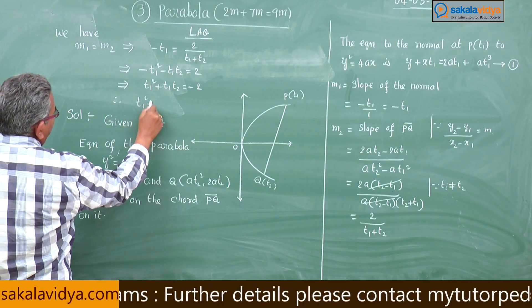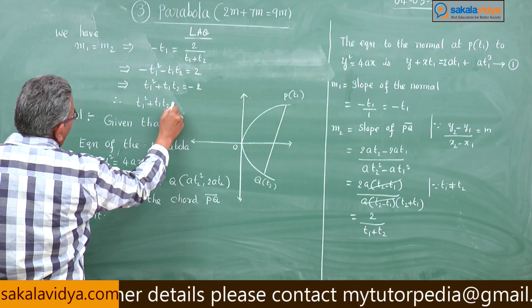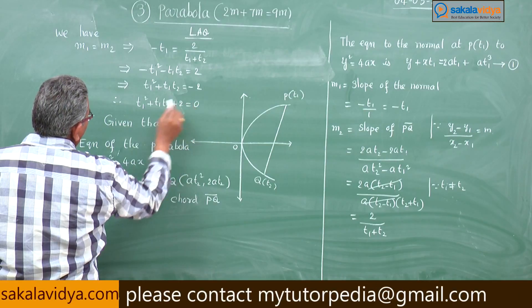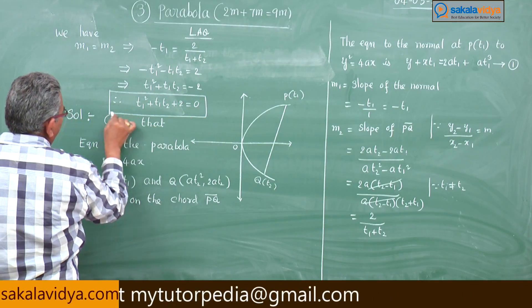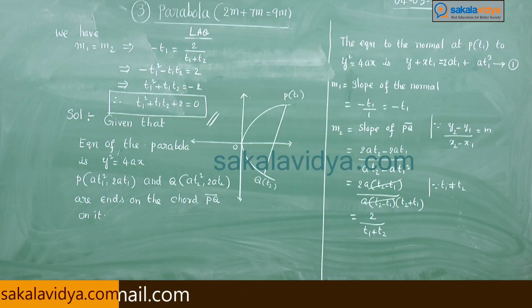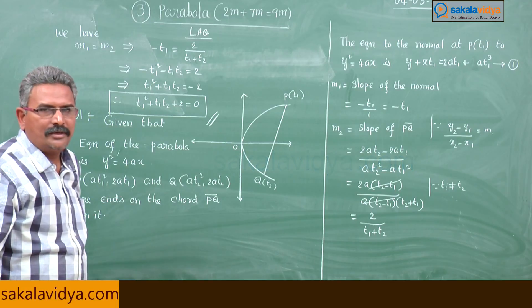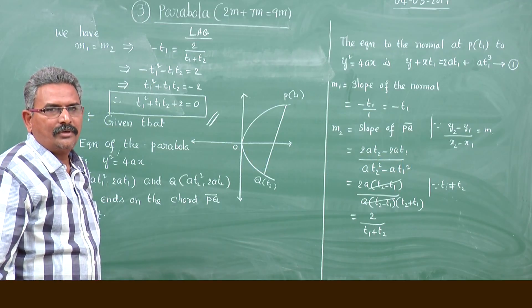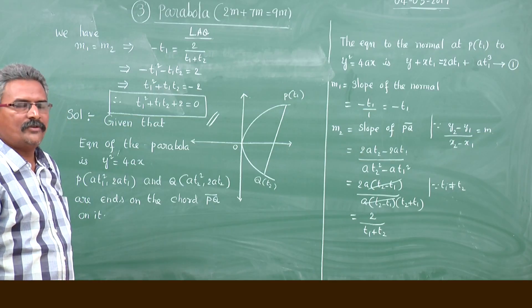t1 squared plus t1·t2 plus 2 equals 0. This is the required answer. I hope you might have followed and understood. Shall we continue in the next problem?